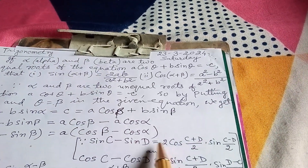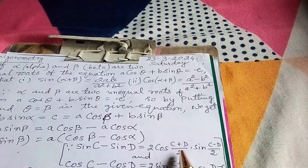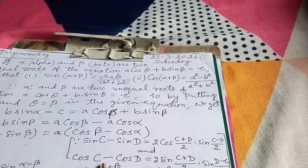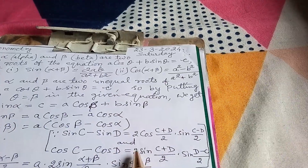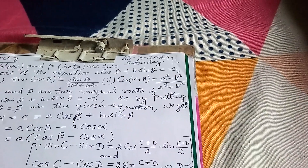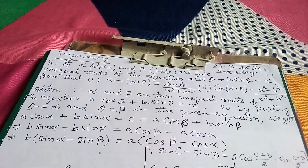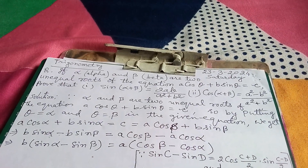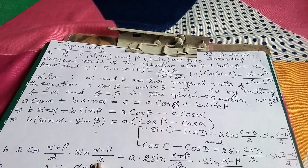Now, we apply the formulas: sin C − sin D = 2·cos((C+D)/2)·sin((C−D)/2), and cos C − cos D = 2·sin((C+D)/2)·sin((D−C)/2). So we write b·2·cos((α+β)/2)·sin((α−β)/2) on the left side.